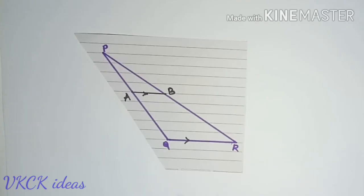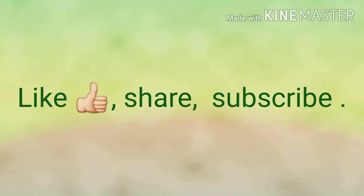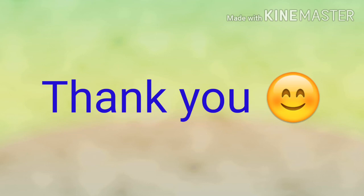Hope you got it and you also do the same activity. Take a ruled sheet of paper, draw any triangle of your choice, draw a parallel line and count the equal number of parts and make sure that the sides are divided in the same ratio. We will meet in the next video with a new activity and a new concept. Until then, bye bye. Thank you.